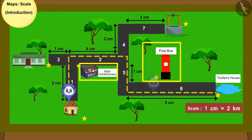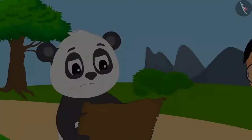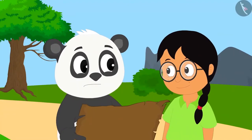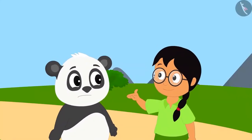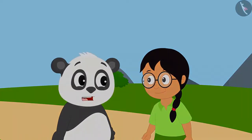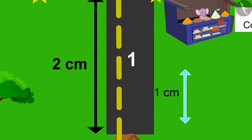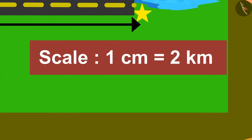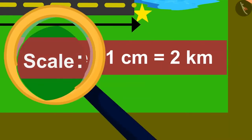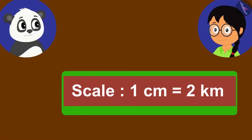After a while, Golu got lost. He saw Minu on the way and asked for directions. As soon as Minu saw the map, she told Golu he would have to go about 4 km more. Golu was shocked — he said he had walked 1 cm on road number 1 as per the map but could not see Appu's confectionery. Minu then drew Golu's attention to the scale on the map, which said: 1 cm equals 2 km.